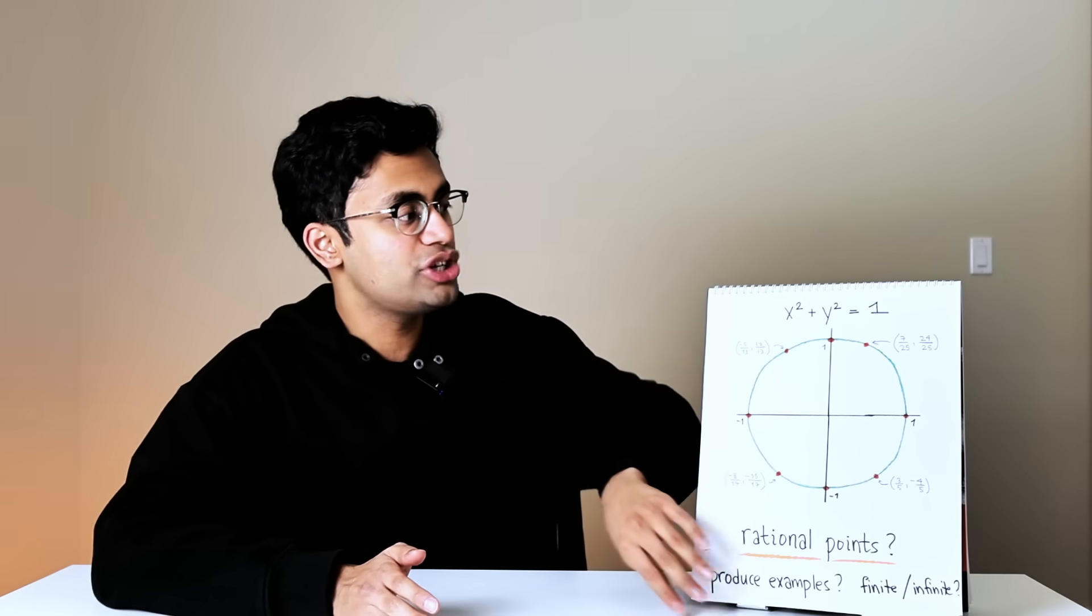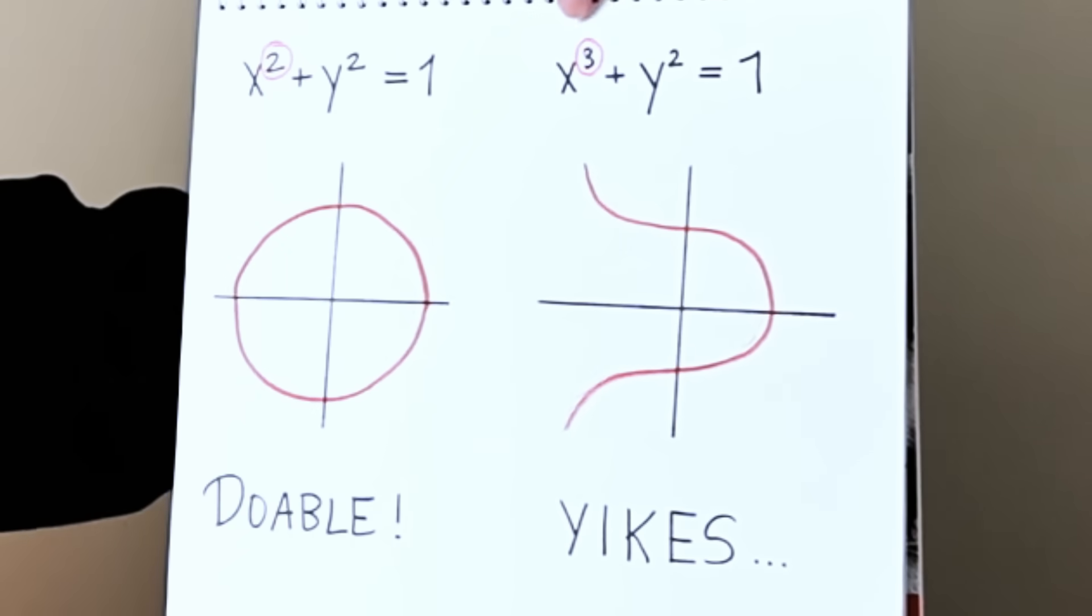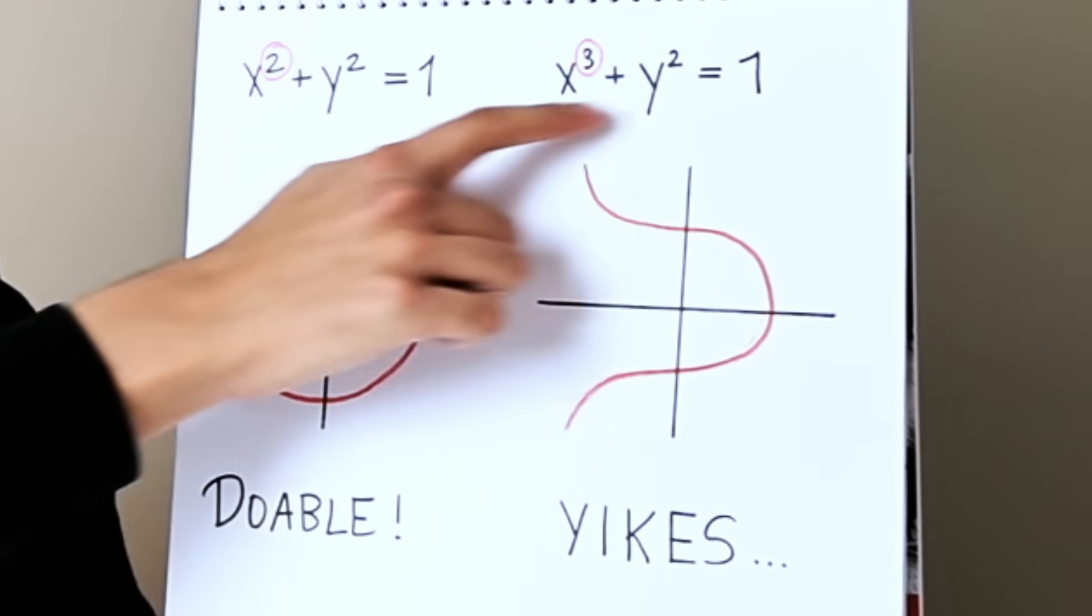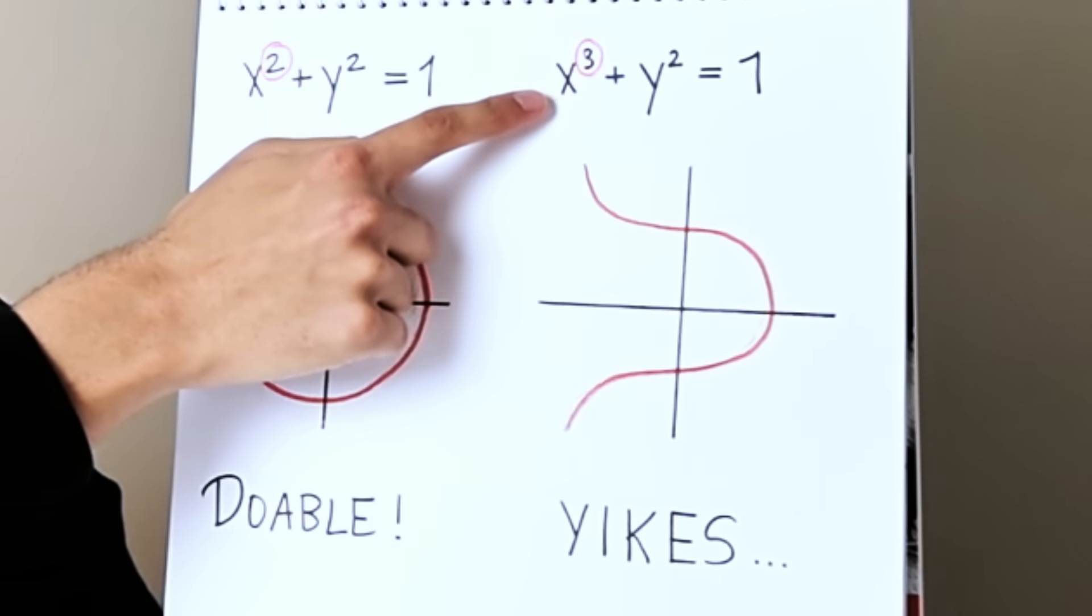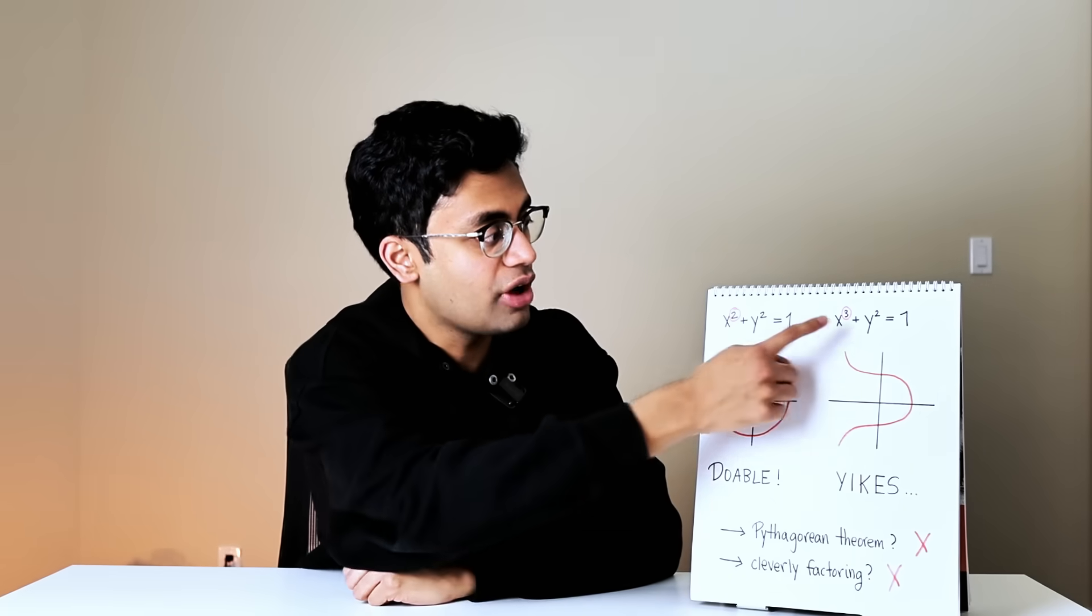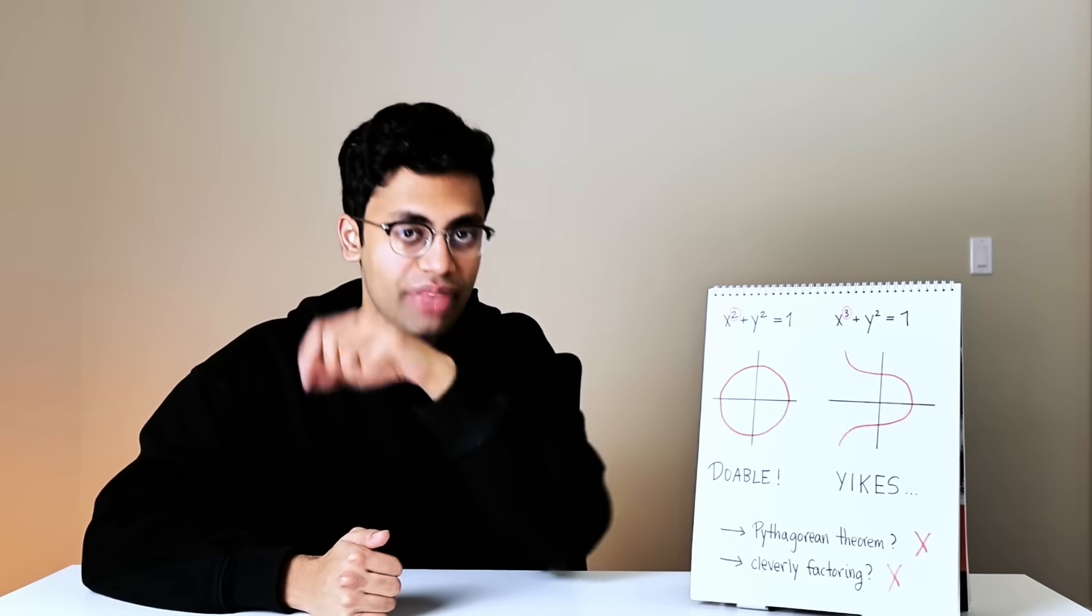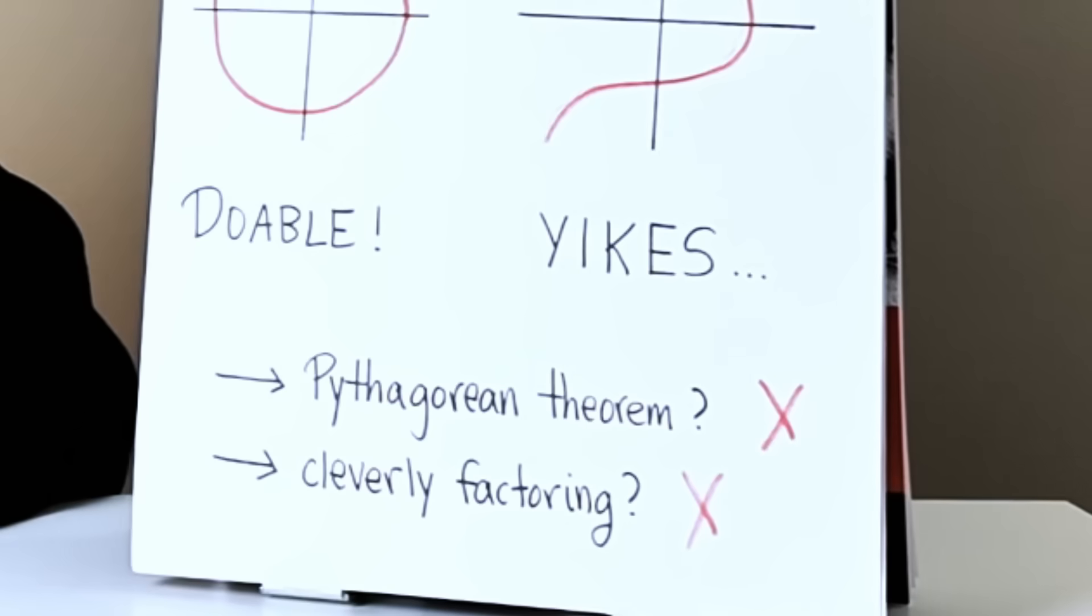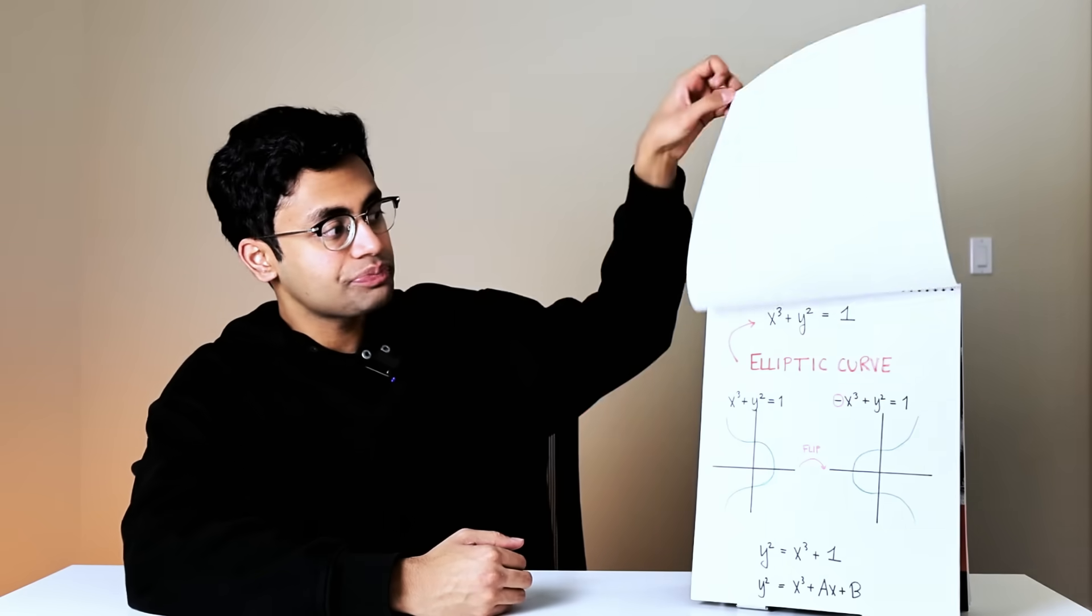I'm now going to make a very small and seemingly insignificant change to the equation. I'm going to take this 2 over here and change it to a 3. So this equation x cubed plus y cubed equals 1 kind of looks like an hourglass now. Finding the rational points on the circle was pretty doable, but finding the rational points on this beast is very very hard. We can try using the Pythagorean theorem, but that fundamentally doesn't work because you're taking things to the third power, and in the Pythagorean theorem everything is squared.